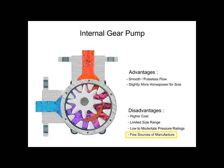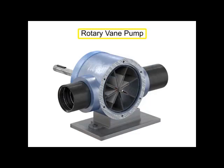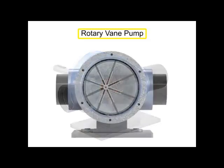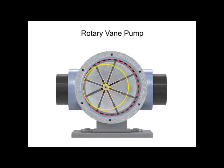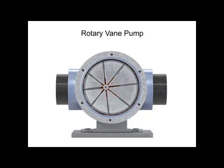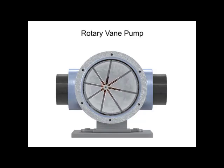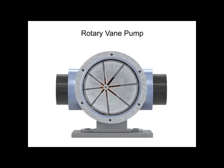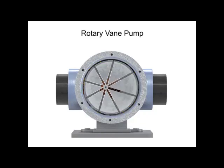A rotary vane pump is a positive displacement pump that consists of vanes mounted to a rotor. The vanes are on an off-center drive shaft. As the shaft rotates, the variable length vanes slide in and out to maintain contact with the pump housing. The tension in the vanes is maintained by either springs or hydraulic pressure.